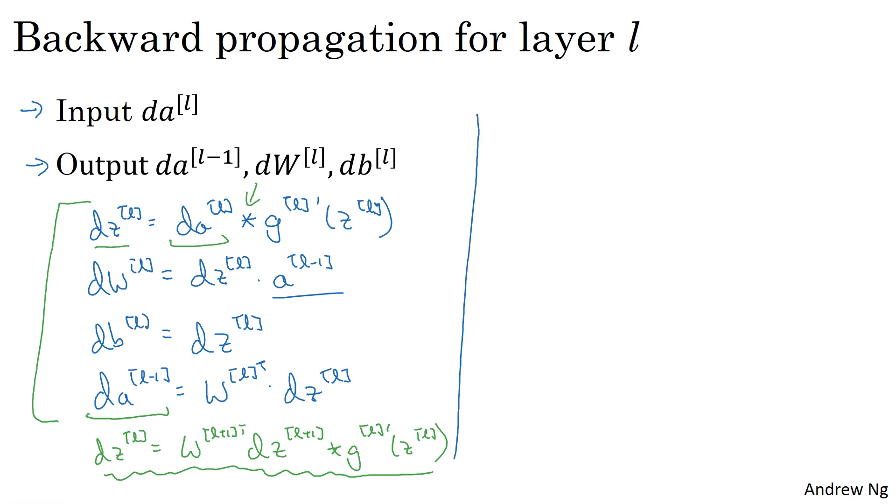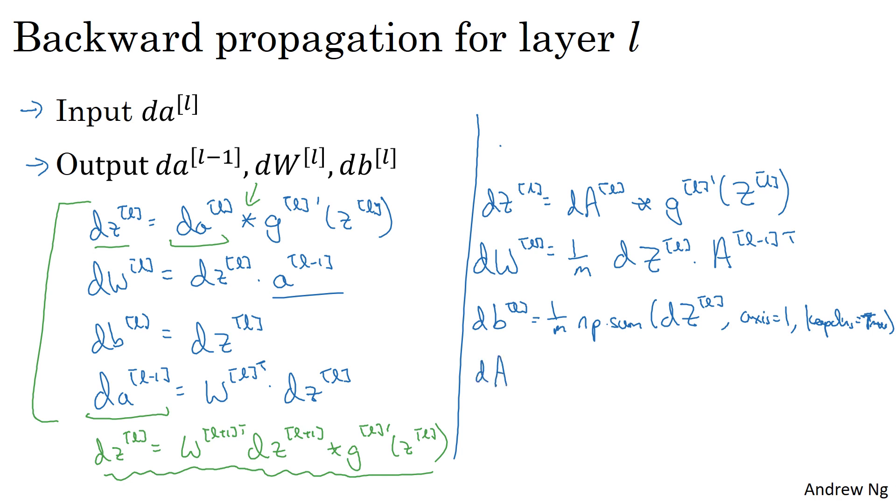I'll just write out the vectorized version. The first line becomes dZ^(l) equals dA^(l) element-wise product with g^(l) prime of Z^(l). dW^(l) becomes 1/m dZ^(l) times A^(l-1) transpose. db^(l) becomes 1/m np.sum of dZ^(l), axis equals 0, keepdims equals true. We talked about the use of np.sum in the previous week to compute db. And finally, dA^(l-1) is W^(l) transpose times dZ^(l).